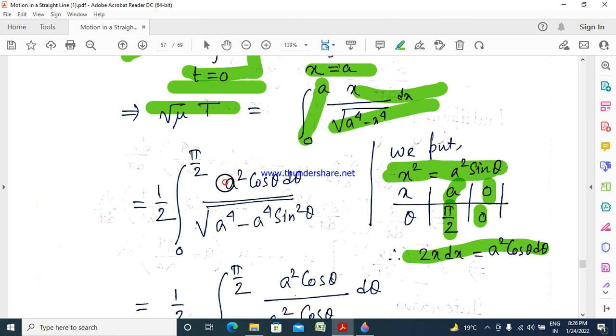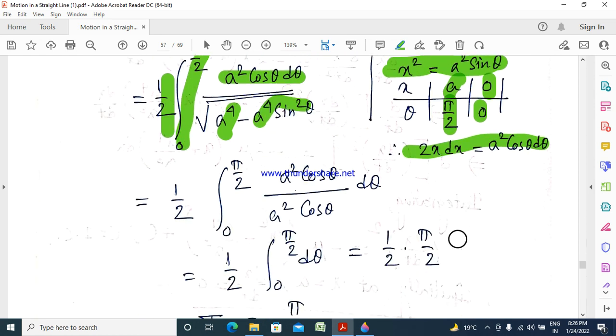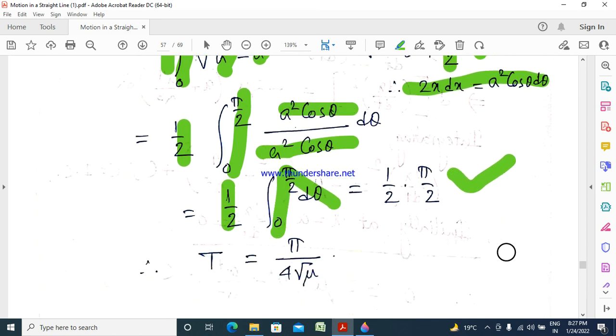Then x dx by root over a to the power 4 minus a to the power 4 sin squared, with integration limits 0 to pi by 2. That is half integral 0 to pi by 2 of a squared cos theta by a squared cos theta d theta. That is half integral 0 to pi by 2 d theta, which is half into pi by 2, that is pi by 4.